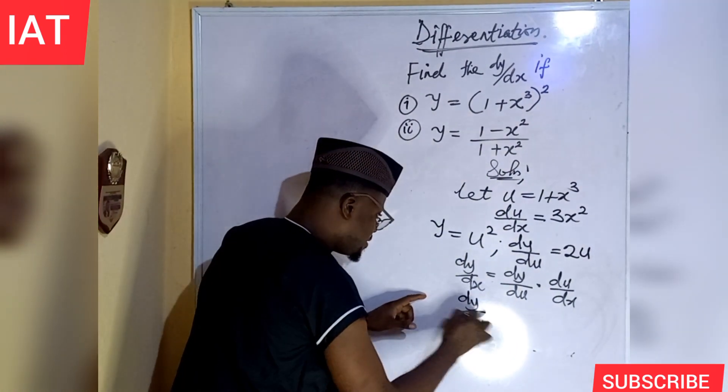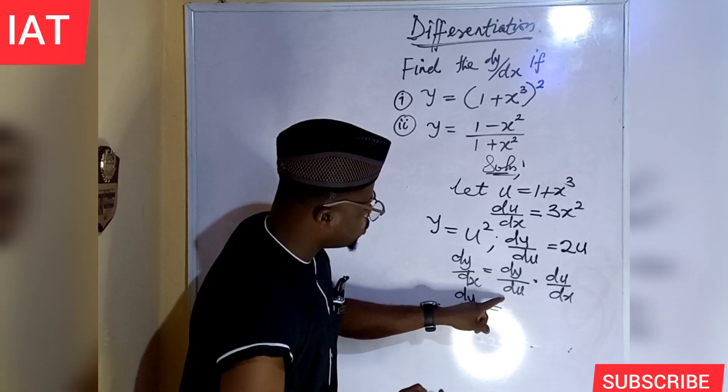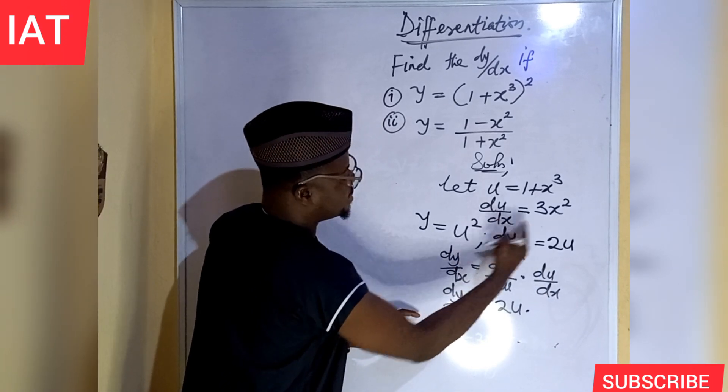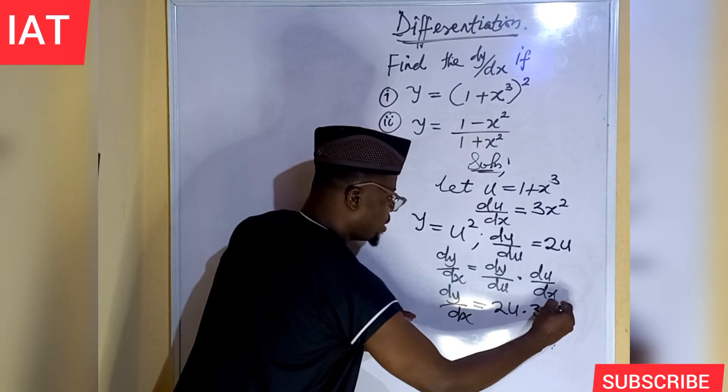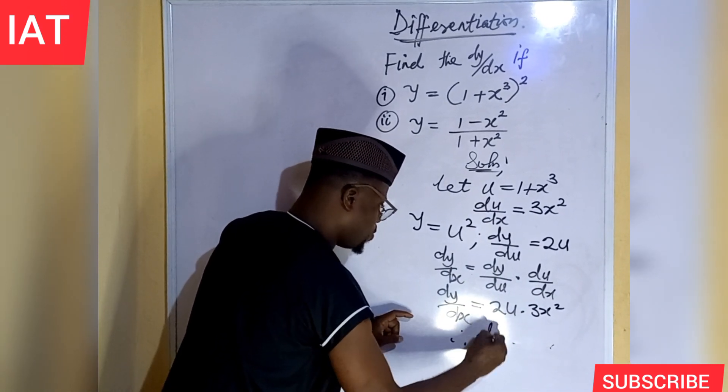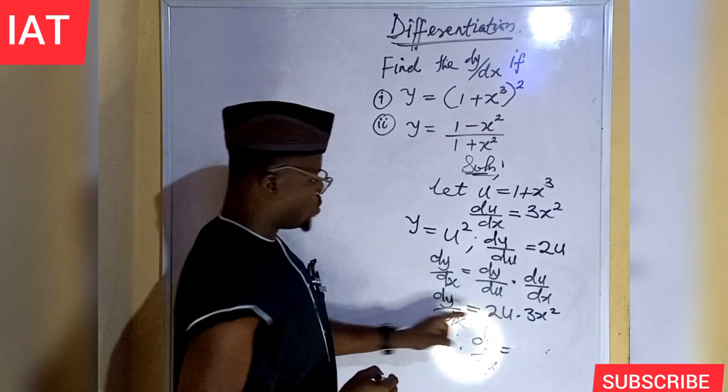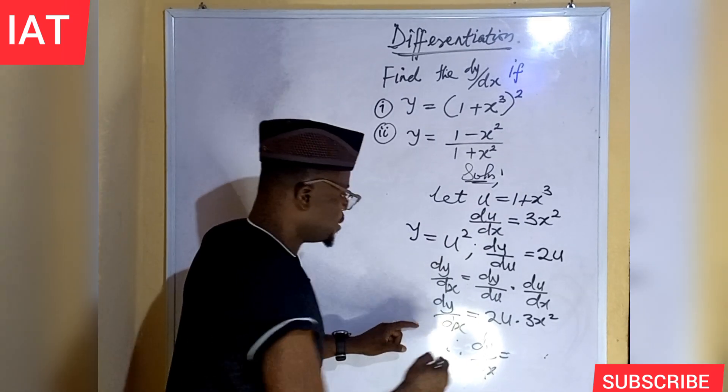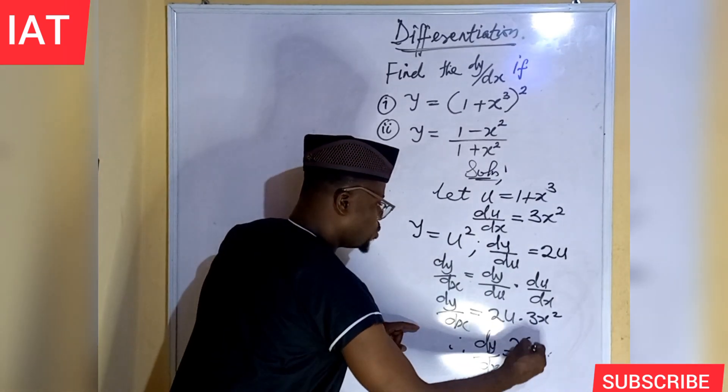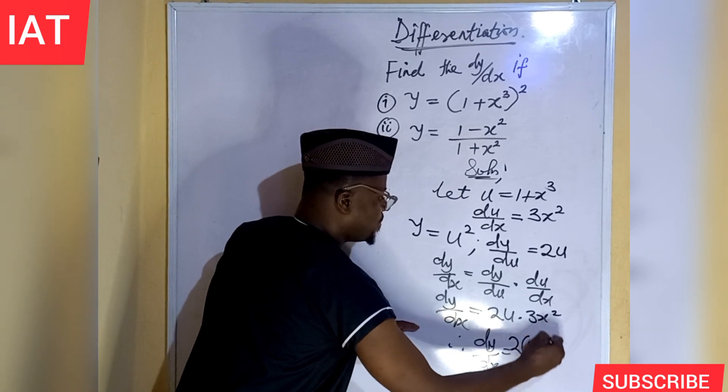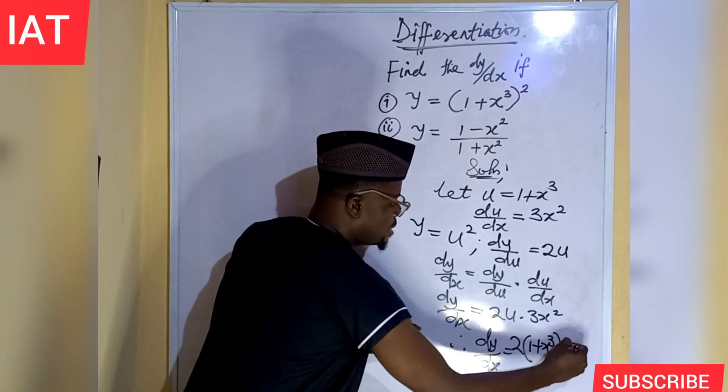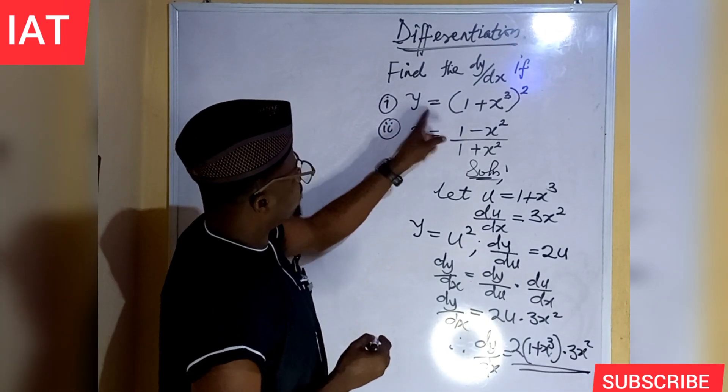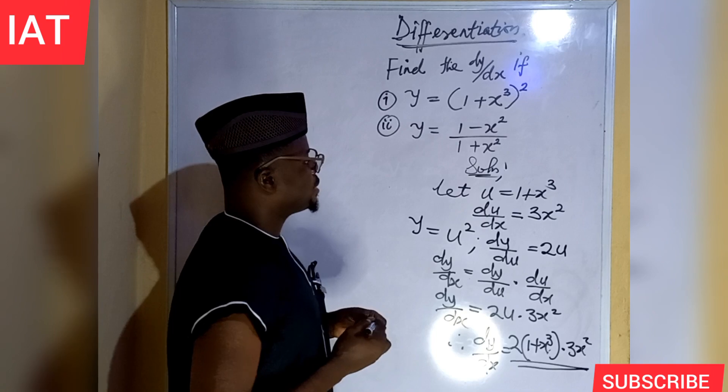So, dy over dx is equal to, dy over du is 2u, dot du over dx is 3x squared. Therefore, dy over dx is equal to, what is our u? Our u here is 1 plus x raised to the power of 3. So, we have 2 into 1 plus x raised to the power of 3, dot 3x squared. And this is the result of this first problem.